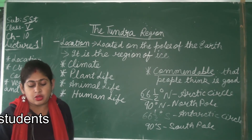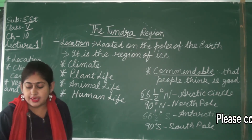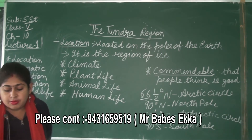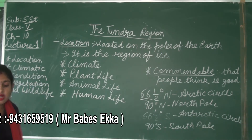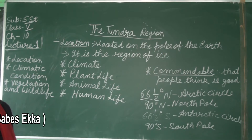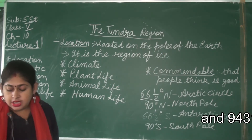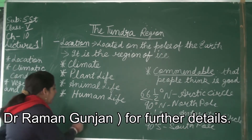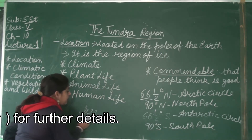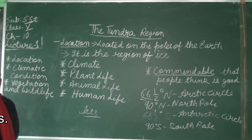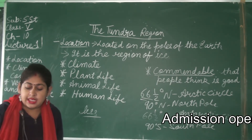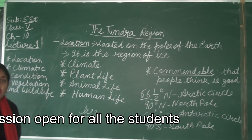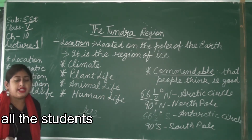Turn to page number 64. Summer is very short and also not very warm in the Tundra region. The Tundra regions receive very scanty — meaning very less — rainfall. That is why they are called the cold desert. The Tundra region is also known as the cold desert.